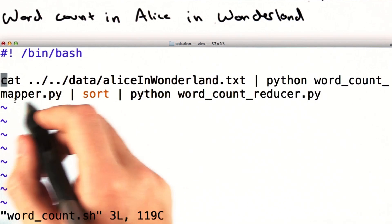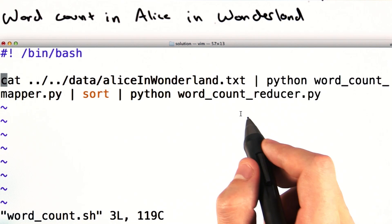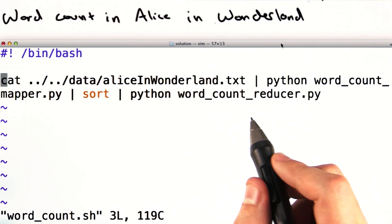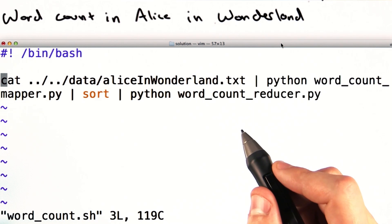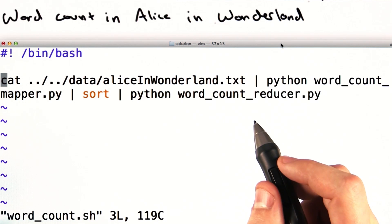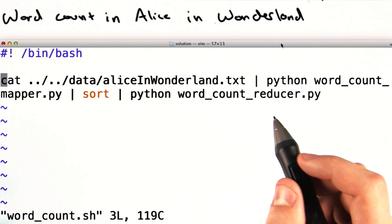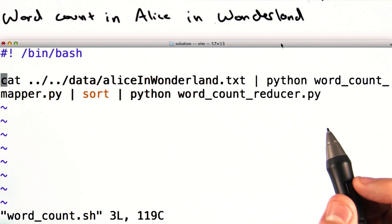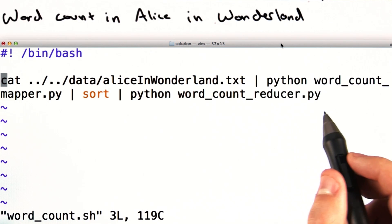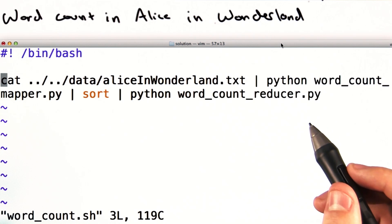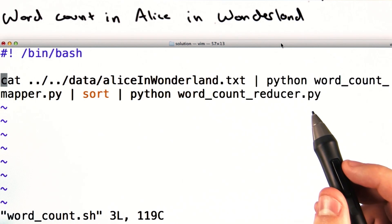So now, if we use the mapper and reducer we just wrote on a more significant example, say the text of Alice in Wonderland, we can check that it works and ensure that it produces the same type of result as the Python script that you wrote earlier in this lesson. We're going to simulate running this MapReduce job by just running these scripts locally using Python. Note this isn't a real MapReduce deployment. We're only running this on one computer.